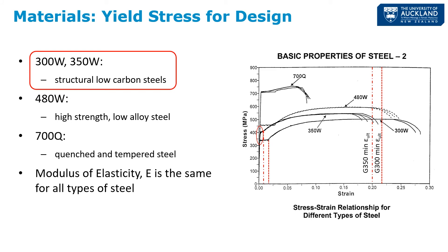That is what we call ductility — the ultimate strain or ultimate deformation achievable divided by the yield strain or yield deformation, while maintaining strength throughout. This is one of the great benefits of structural steel: it is very ductile, which makes it really useful for seismic applications.